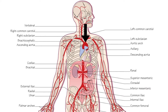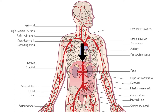It then turns left and backward, forming the aortic arch. It then turns downward, forming the descending thoracic aorta. The descending thoracic aorta passes through the thorax on the vertebral column, giving various branches in the mediastinum. It passes through the aortic hiatus in the diaphragm at T12 to become the abdominal aorta.